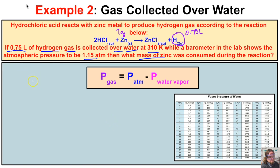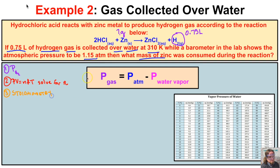We'll solve this in three steps. Step 1: figure out the pressure of the hydrogen gas. Step 2: plug that into PV = nRT and solve for n, the number of moles of hydrogen gas. Step 3: use stoichiometry to find the mass of zinc consumed.